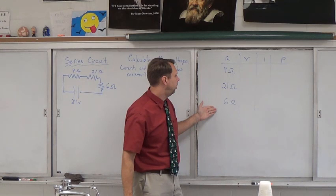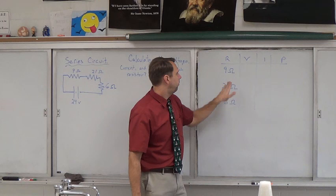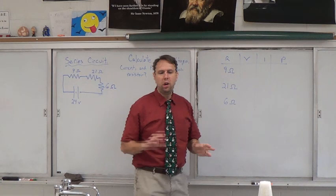We're going to organize that information in a chart over here, where we have our very important physics: resistance, voltage, current, and power. And we can then, for the nine ohm resistor, get the voltage, the current, and the power.